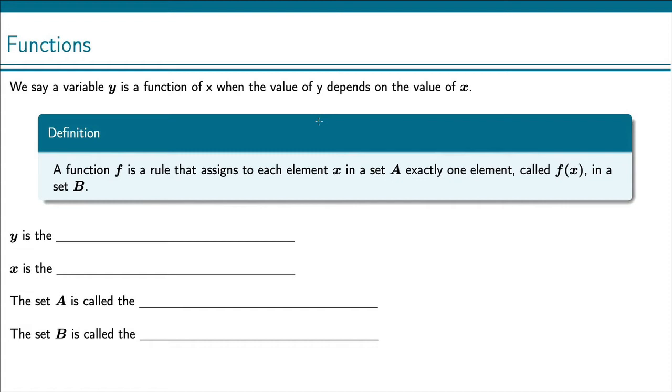So the formal definition is that a function f is a rule that assigns each element x in a set A, exactly one element, called f(x), which is in some set B.